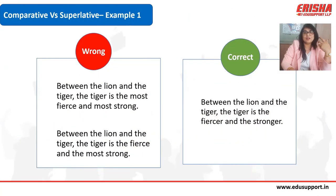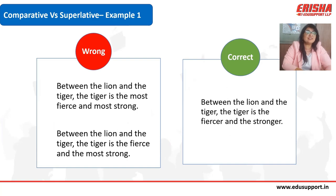Now let's look at an example sentence where the comparative and superlative forms of adjectives are used incorrectly. The sentence says: 'Between the lion and the tiger, the tiger is the most fierce and most strong.' The next version says: 'Between the lion and the tiger, the tiger is fierce and the most strong.'